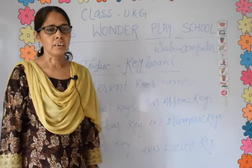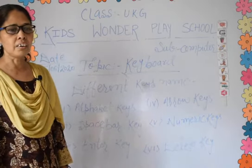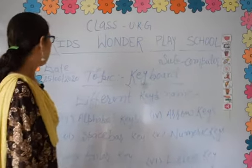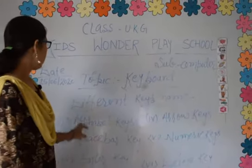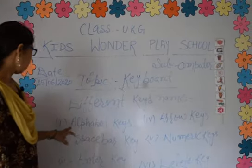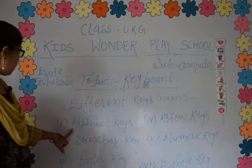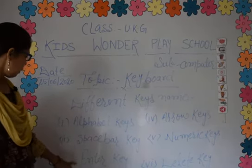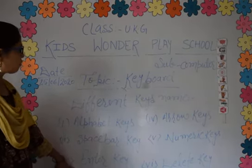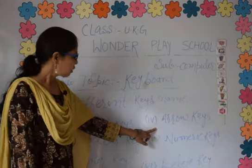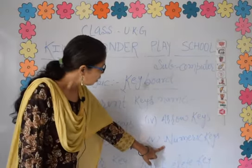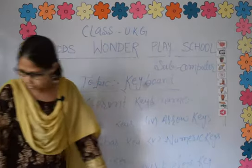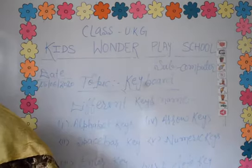So children, there are different keys in the keyboard. Different key names: alphabet keys, space bar keys, enter keys, arrow keys, numeric keys, and delete key.